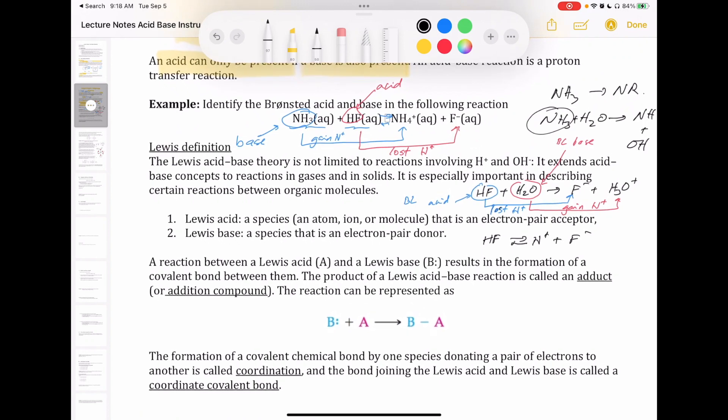There's now a third definition that we need to get into, which is called the Lewis definition. And this is the one that we're not going to talk a whole lot about. We're going to mention it here just to introduce you to the idea. There are a couple of different species whose acidity can be explained by the Lewis definition, so it's important in that sense.